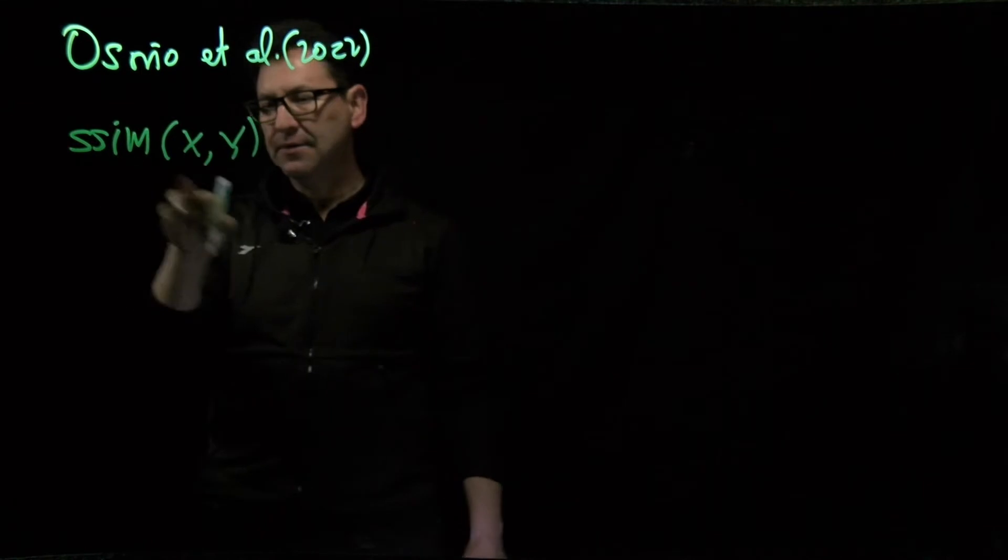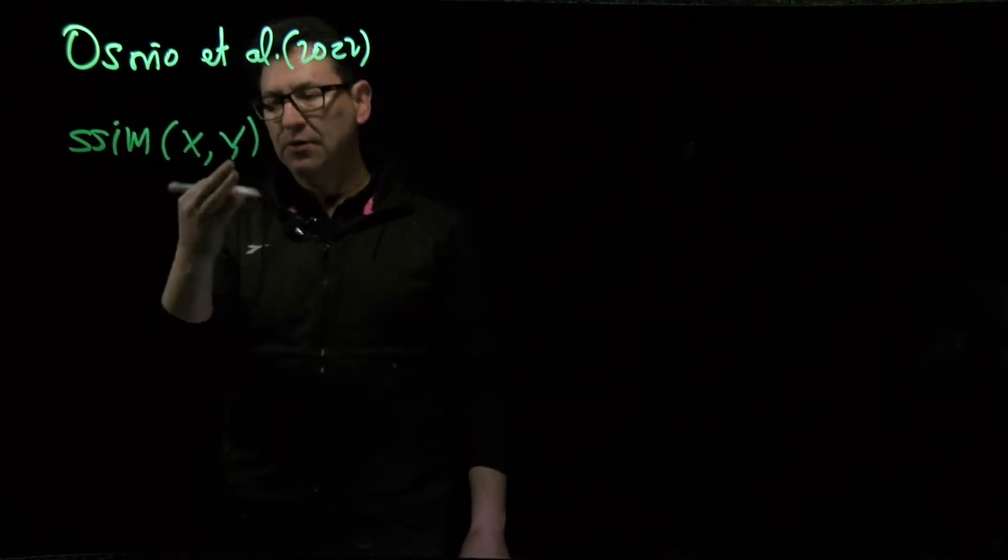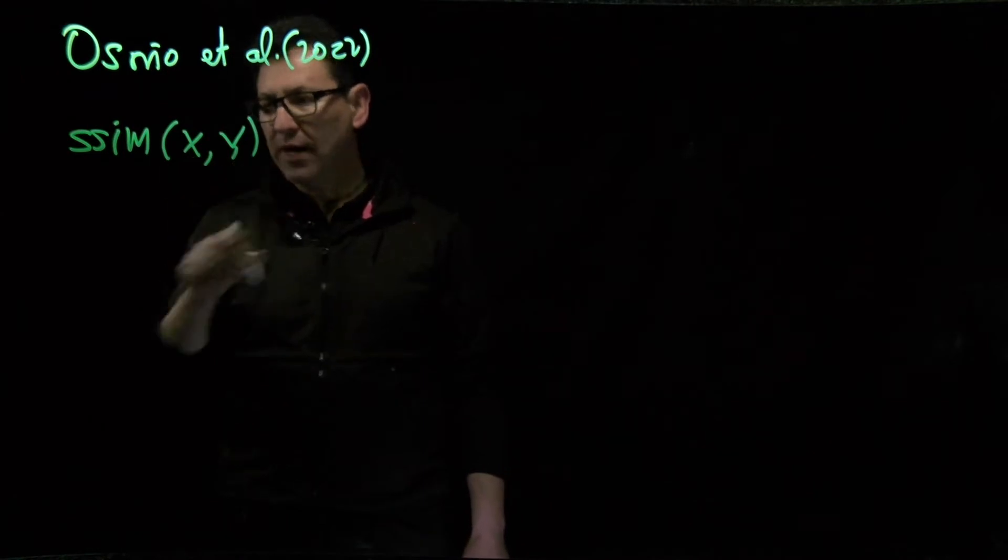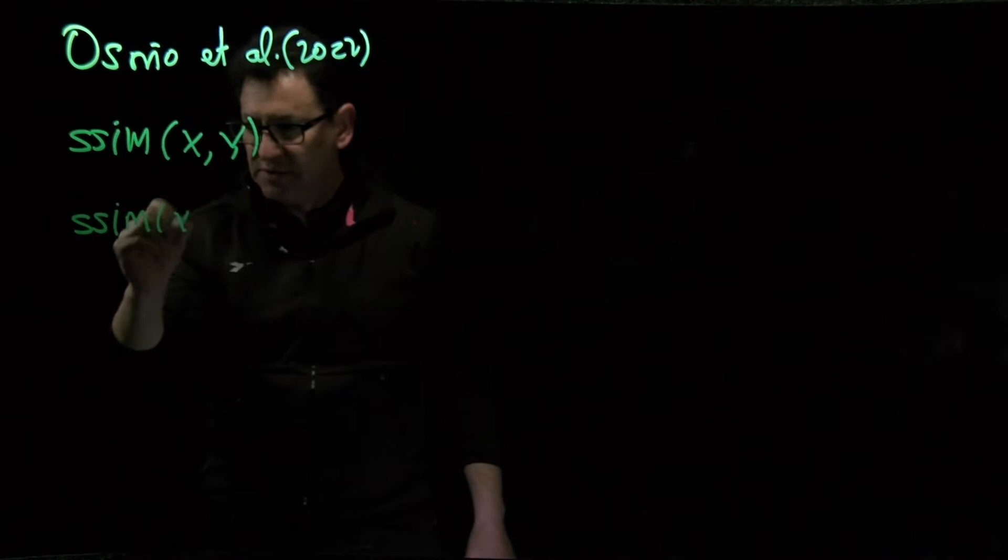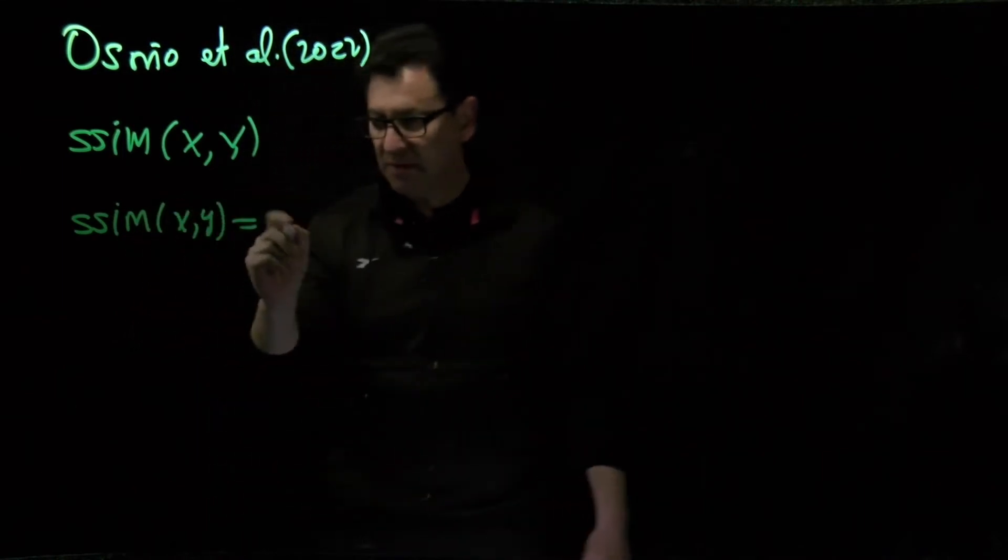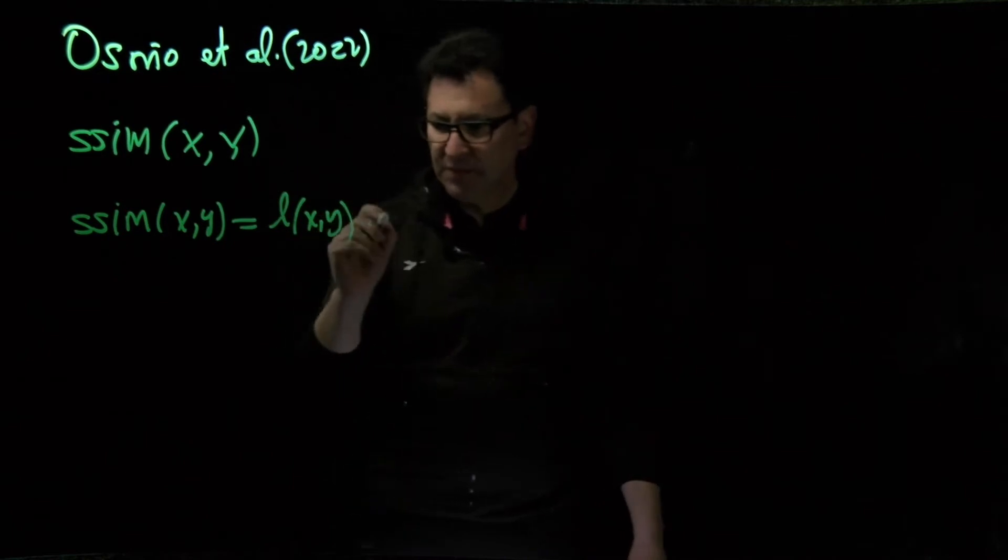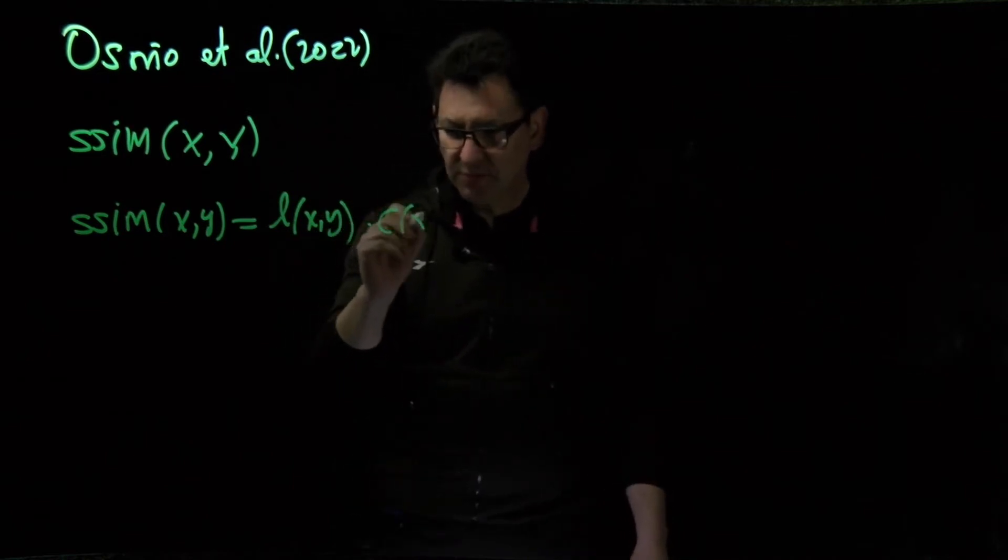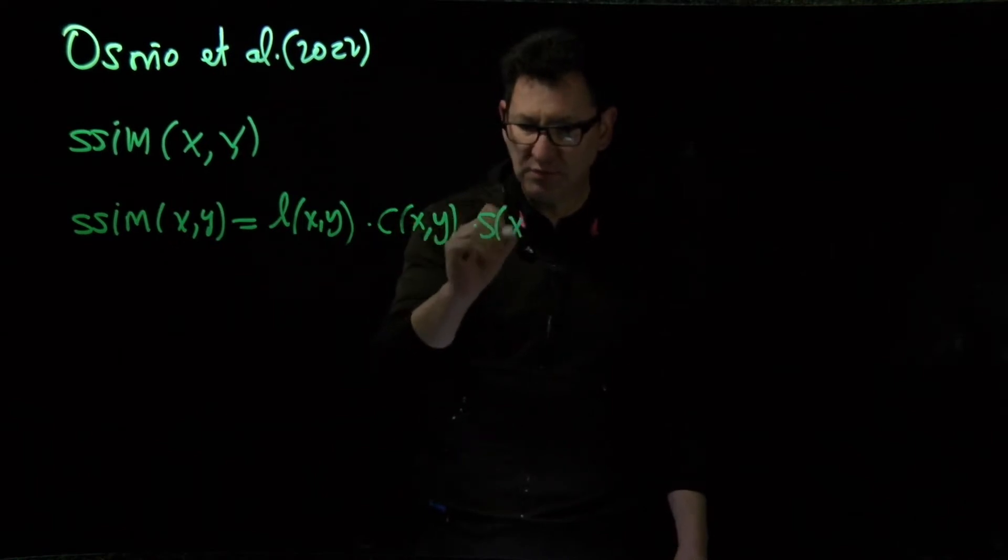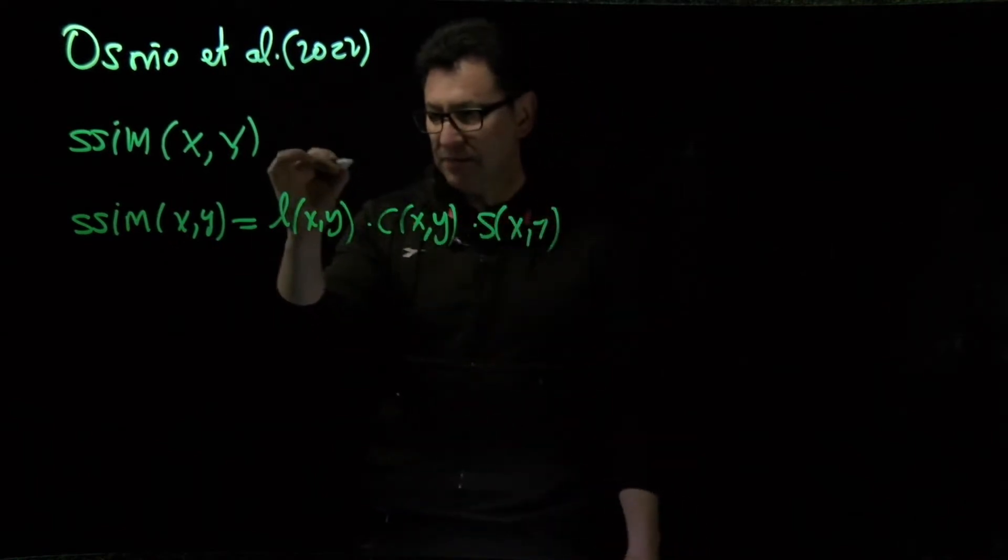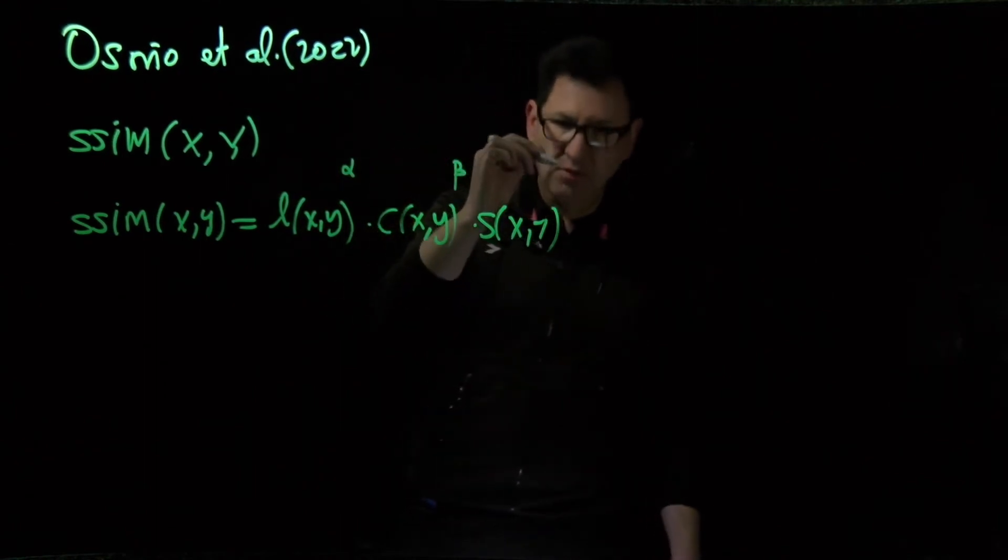Assume we have two available images called x and y. The SSIM coefficient is defined as luminance between images x and y times contrast between images x and y times correlation between the images, to the power alpha, beta, and gamma respectively.